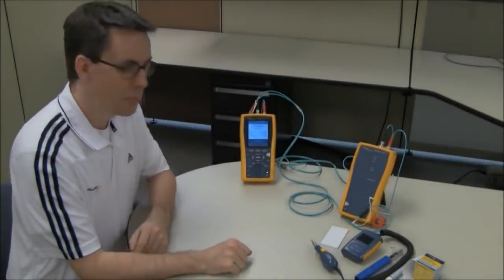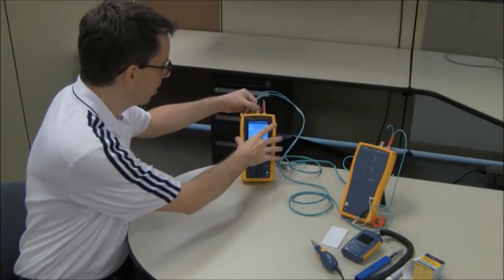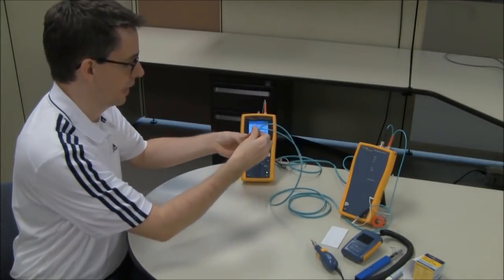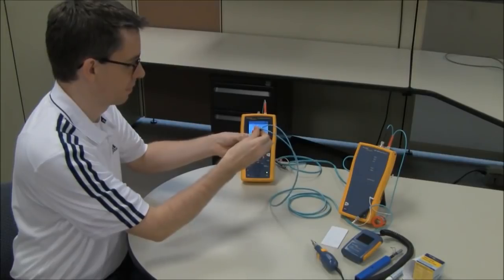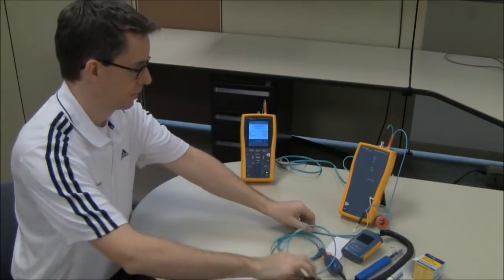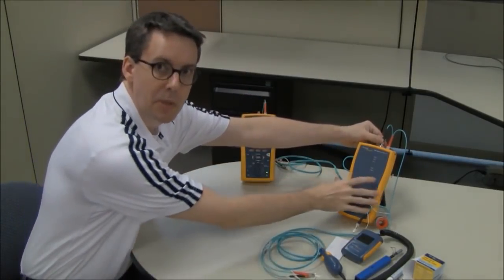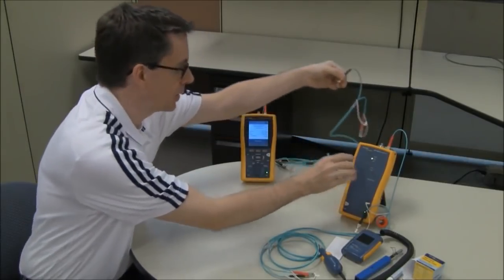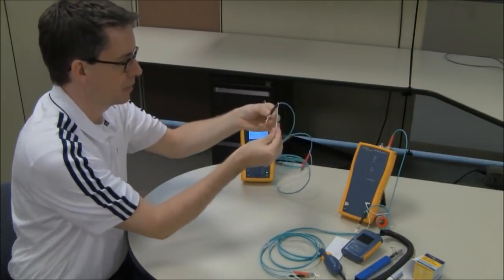Now, I'm going to remove the fiber from the input port on the main unit and cap it. And also, remove it from the input port on the remote unit. And again, cap it to protect it.